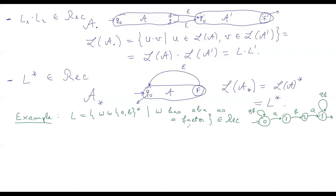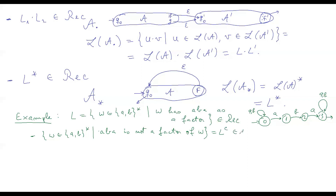As a consequence, all words in {A,B}* such that ABA is not a factor of W — this language is obviously the complement of L, so that's also a recognizable language. Not having a particular factor is therefore a recognizable property.